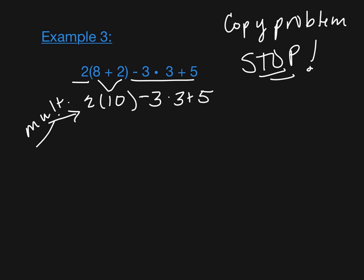So I've got multiplication, multiplication. I need to do that in order from left to right. So first I'm going to do 2 times 10. Underline the rest. That's 20, minus 3, times 3, plus 5. I continue on. I've still got more multiplication right there. Underline what I'm not doing. That gives me 20, minus 9, minus 9, plus 5.